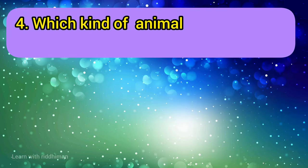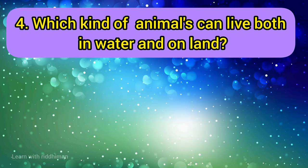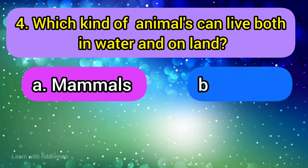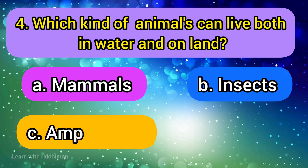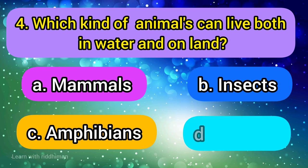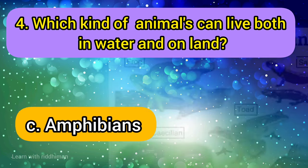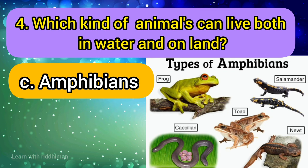Which kind of animals can live both in water and on land? Mammoths, insects, amphibians, reptiles. Answer is amphibians.